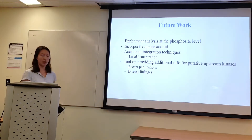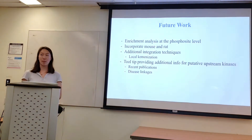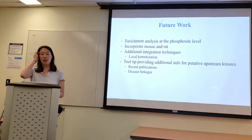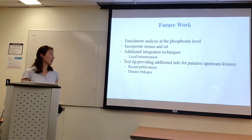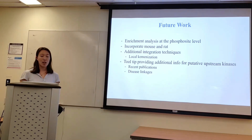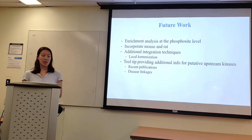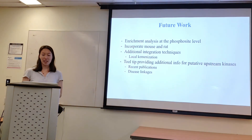A few things in the future that we can do to improve KIA-3: we'd like to also be able to have phosphosites as inputs. We would like to expand on the KIA-3 libraries by incorporating libraries for mouse and for rat. We would also like to implement new integration techniques, seeing as mean rank and top rank outperform the individual libraries, and so we'd like to incorporate rank aggregation methods like local chemoinformatics. We would also like to integrate a tooltip that provides potentially useful information, such as disease linkages and recent publications for each putative upstream kinase.